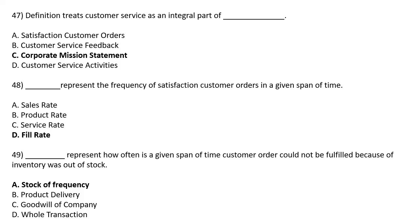DASH represents how often, in a given span of time, a customer order could not be fulfilled because inventory was out of stock — Option A: Stock-out Frequency, Option B: Product Delivery, Option C: Goodwill of Company, Option D: Whole Transaction. Correct answer is Option A: Stock-out Frequency.